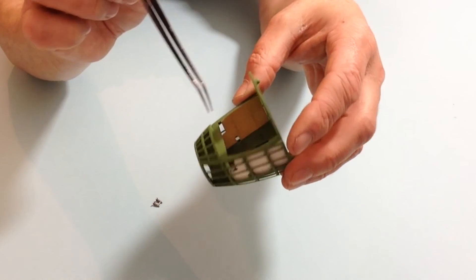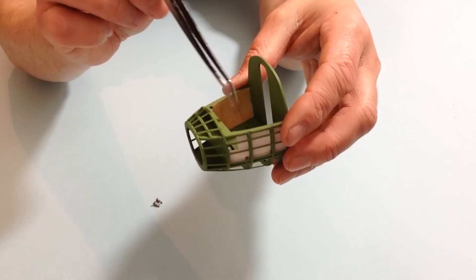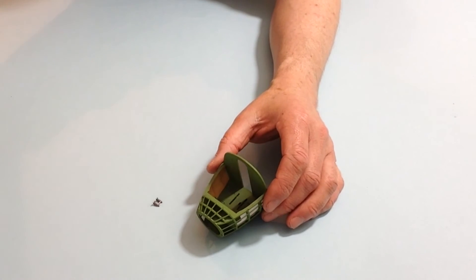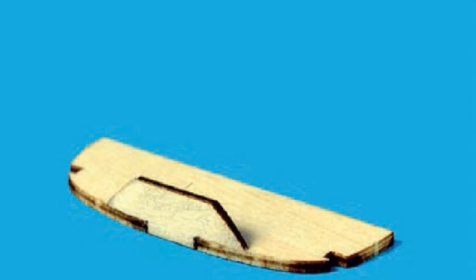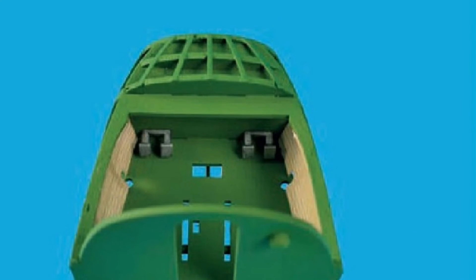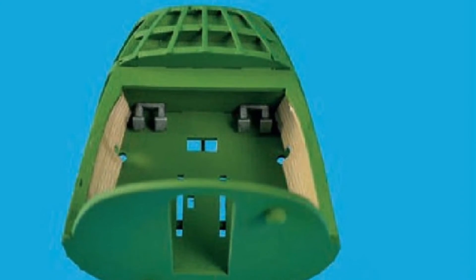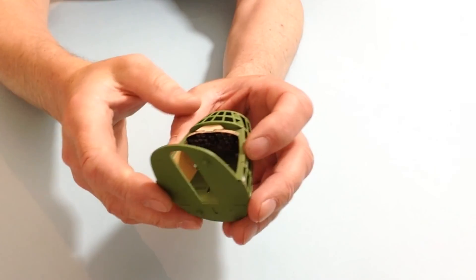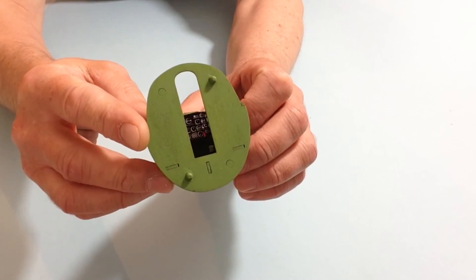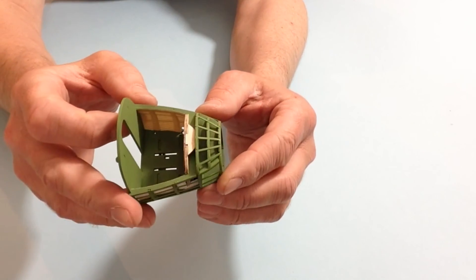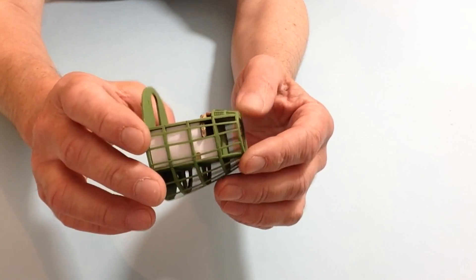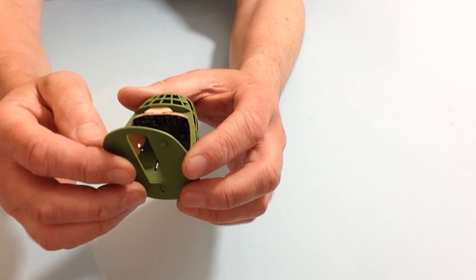As you can see, we've got the instrument panel assembly in position, visible through the back. Next we're going to be adding the seats, putting the seats into position.